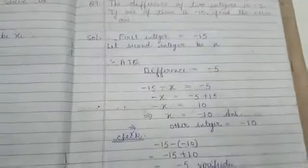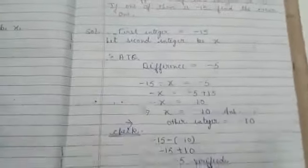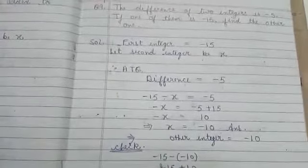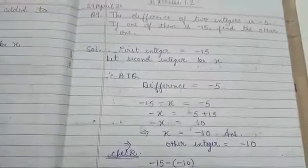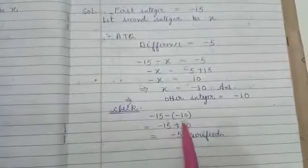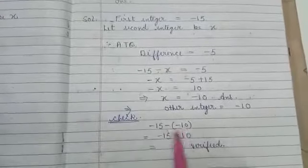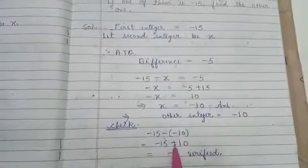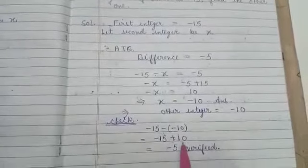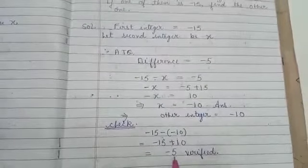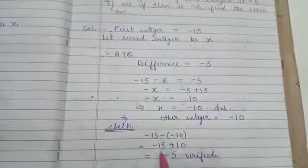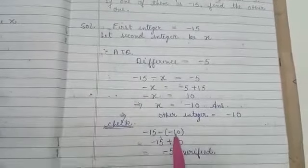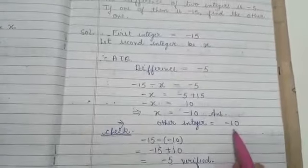Now we can check this question also. How will we check it? The first number is minus 15. Difference means subtraction sign. And the other number is minus 10. Now solve it: minus 15, this minus minus becomes plus when we open the bracket. Minus 15 plus 10. This minus 5 comes. And minus 5 is the difference given. And here we have found the difference of 2 digits. Clearly this answer is correct.